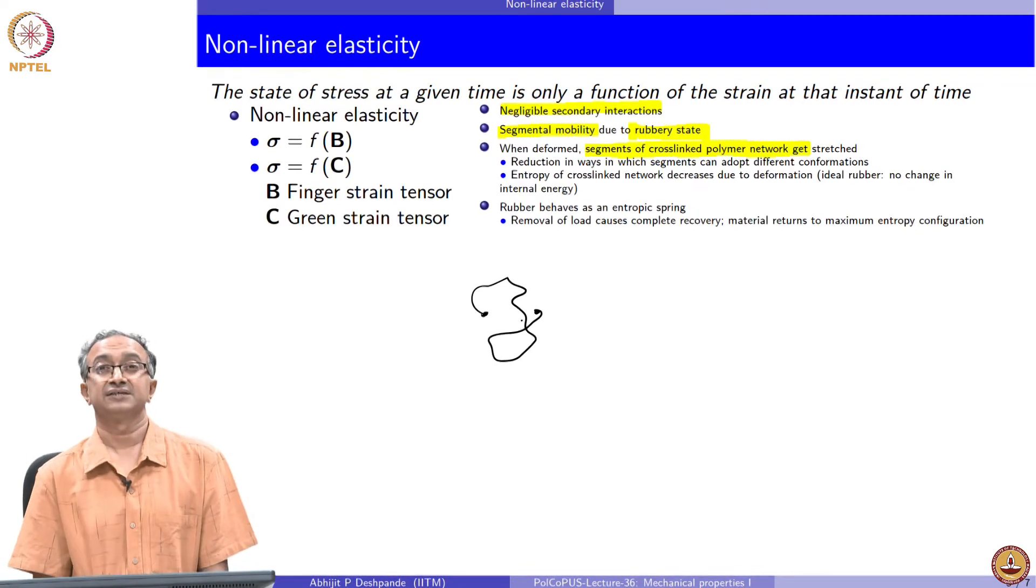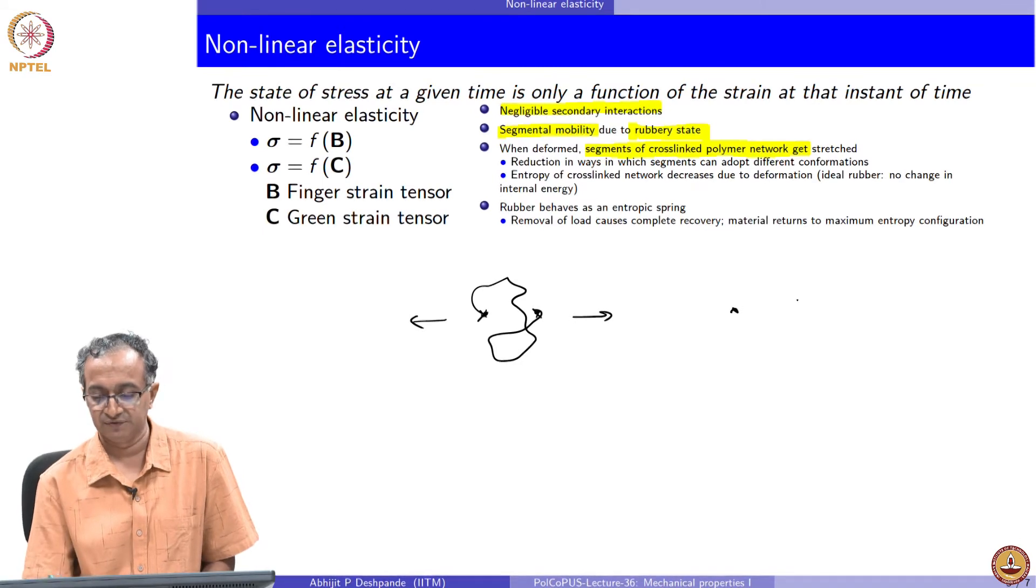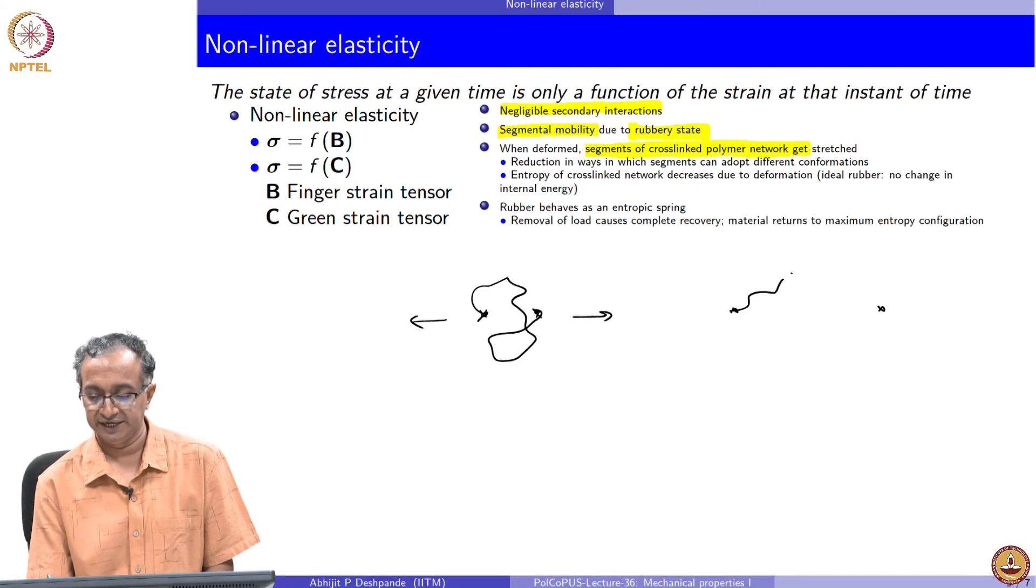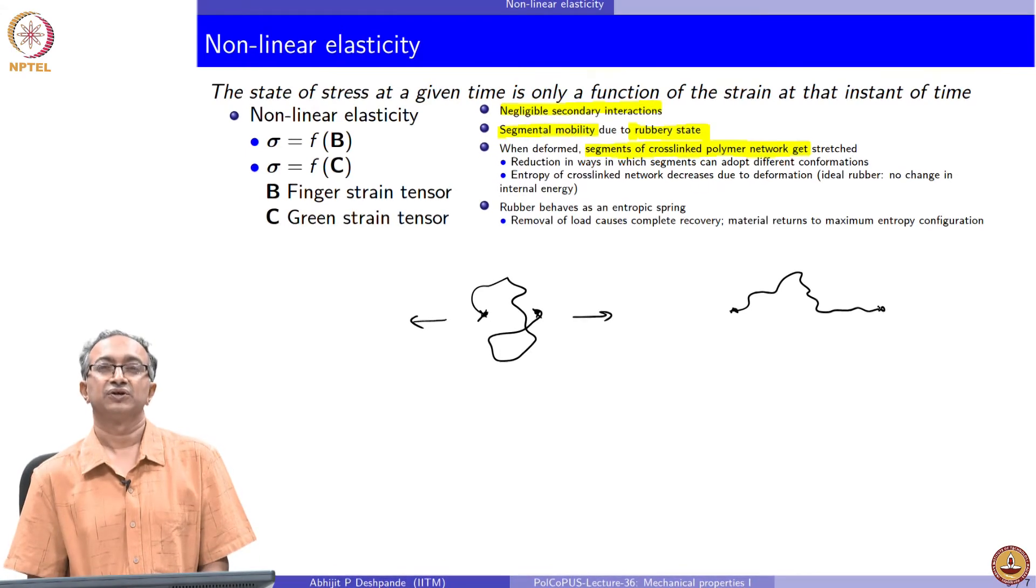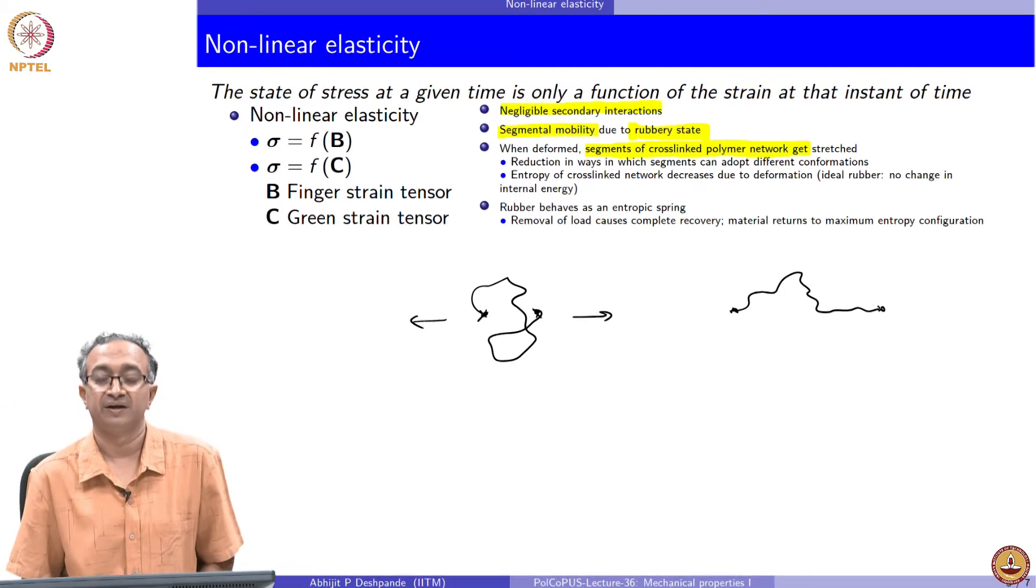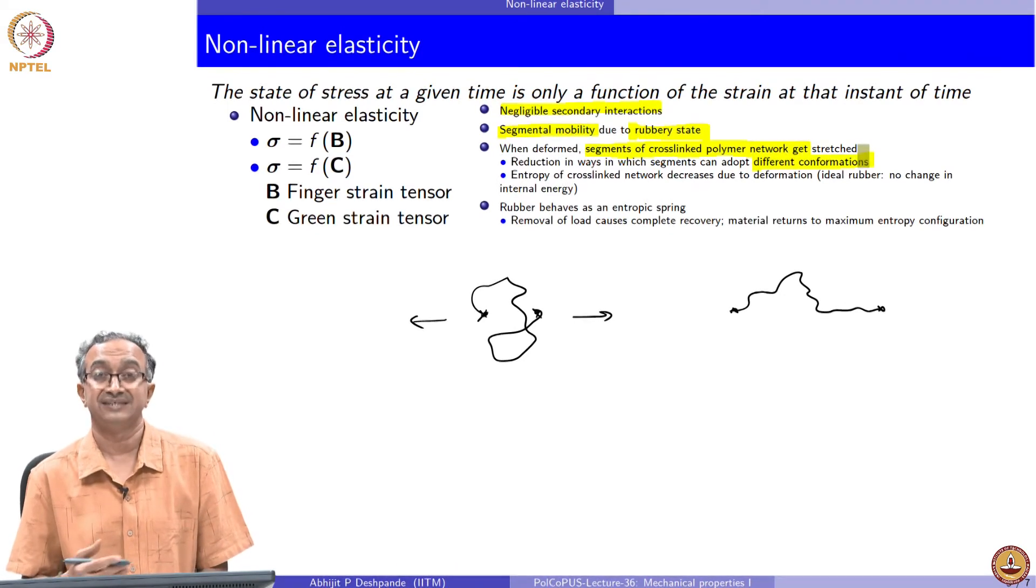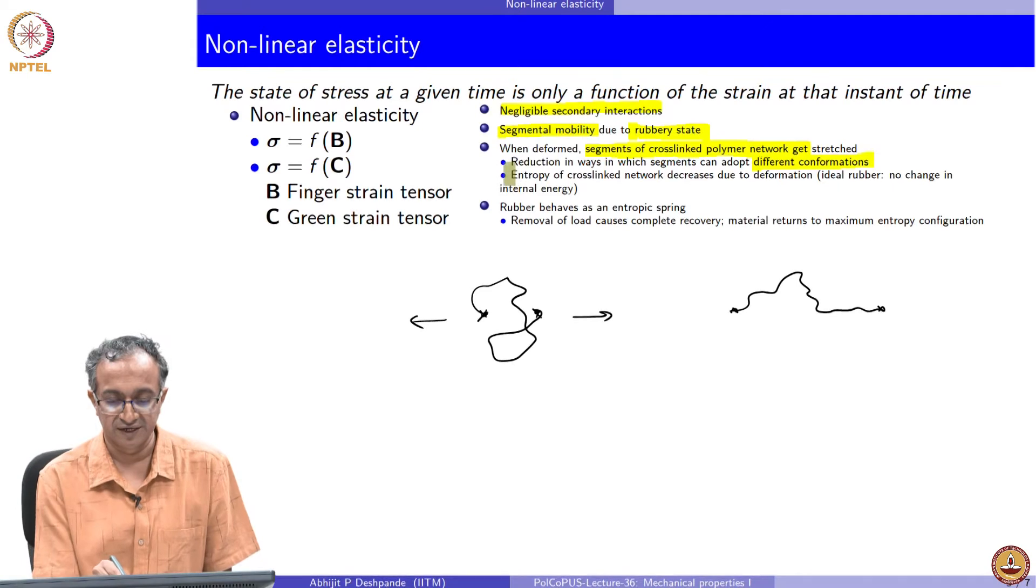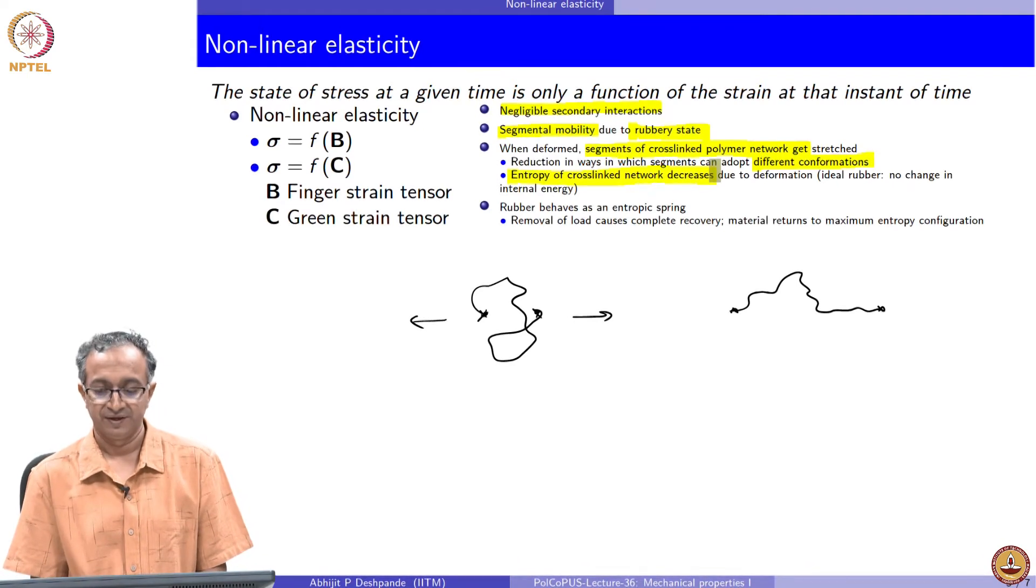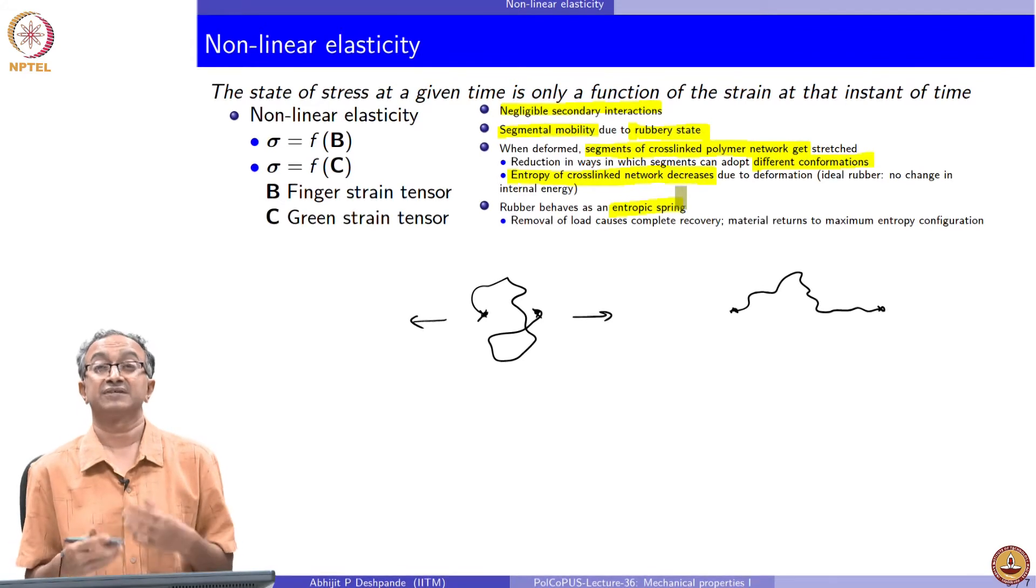If this is the polymer chain which is dangling between two cross-linked points and if this is being stretched, what happens is if you stretch it then the chain has much less freedom. The number of ways in this conformation can change for a stretched chain is very less compared to an undeformed chain. Different conformations become less and less if you do stretching and therefore, the entropy of cross-linked network decreases. As soon as you release the extension, the material comes back because of maximization of entropy. Therefore, rubber behaves like an entropic spring.